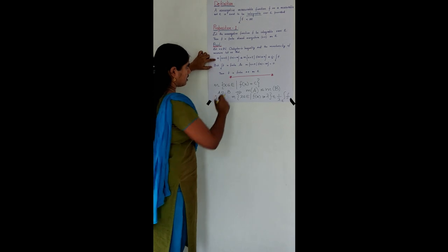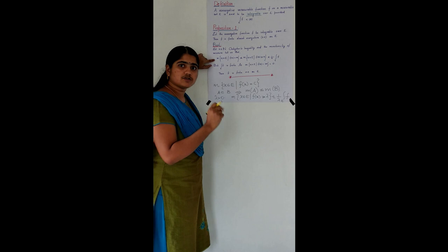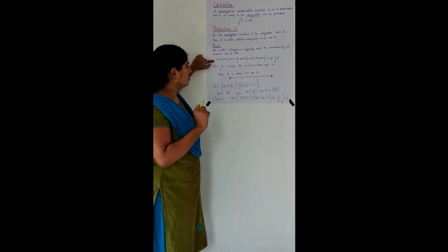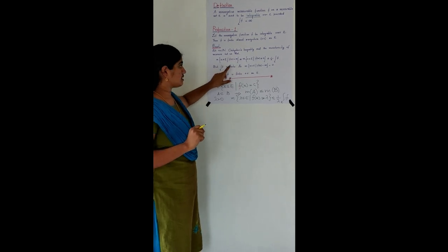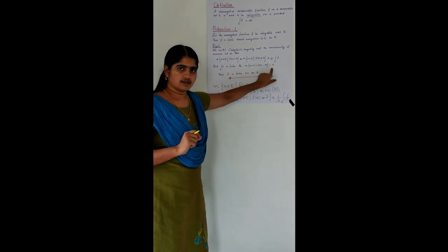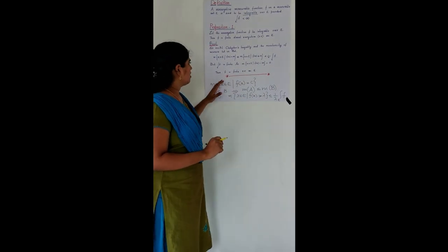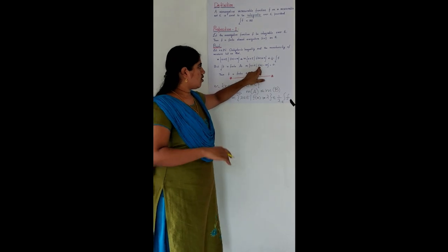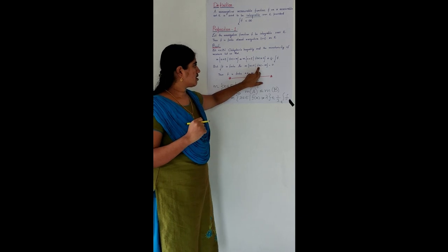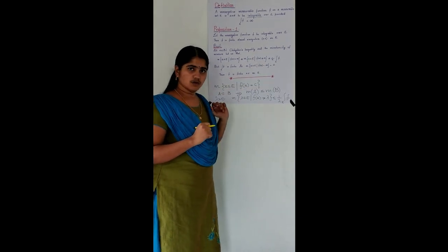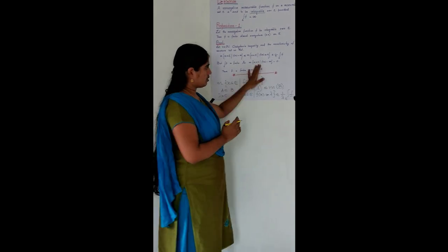So the measure of {F = ∞} is less than or equal to (1/N) times a finite number, and this is true for every natural number N. Therefore, the measure of the set of all X in E such that F(X) equals infinity is zero.